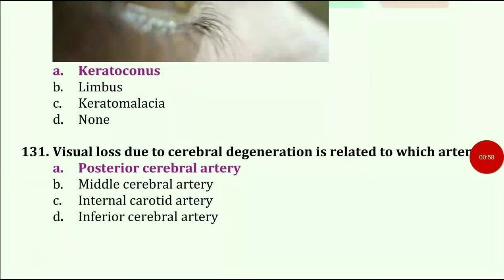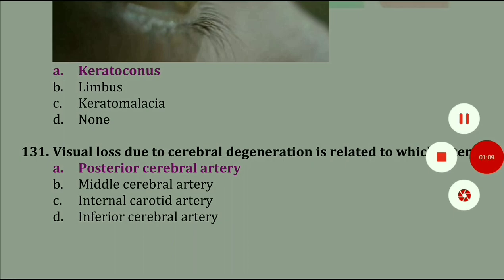Visual loss due to cerebral degeneration is related to which artery? The answer is posterior cerebral artery.